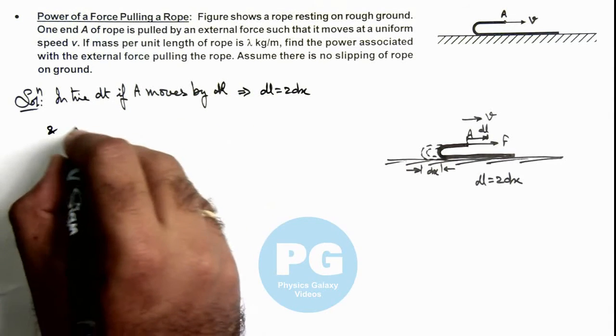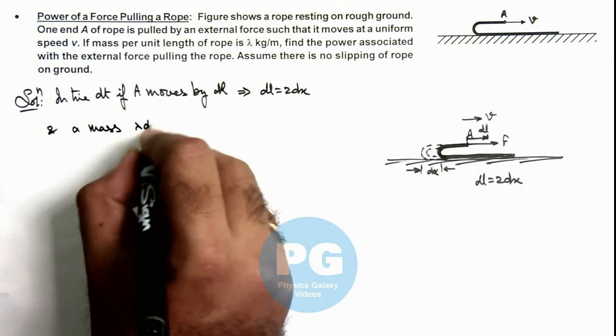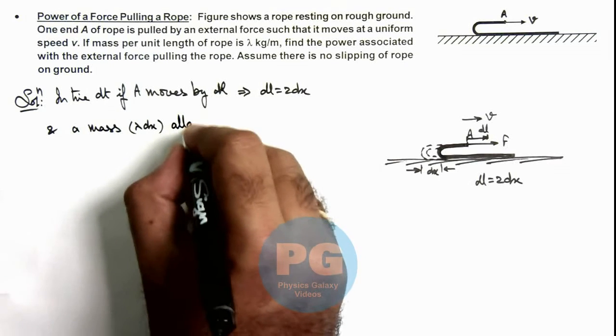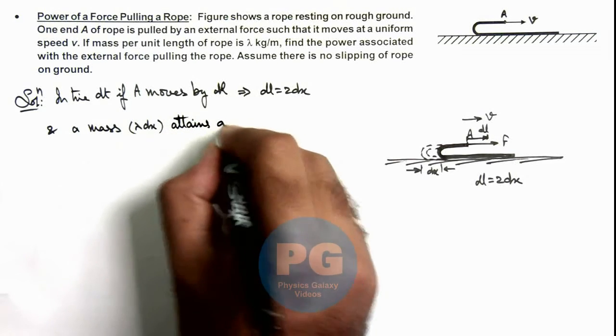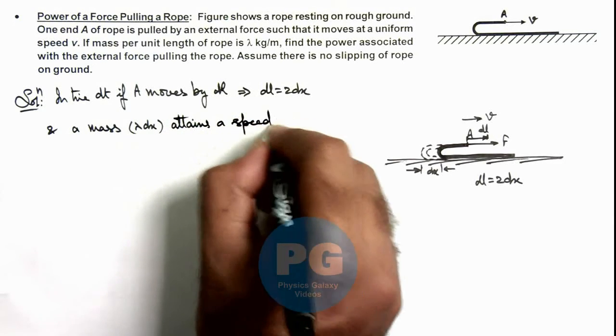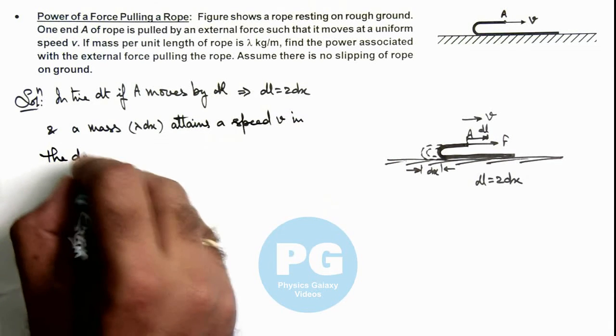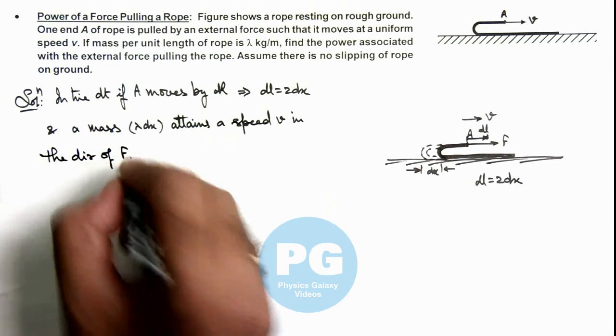And a mass λdx, which was earlier resting on ground, attains a speed v in the direction of the external force.